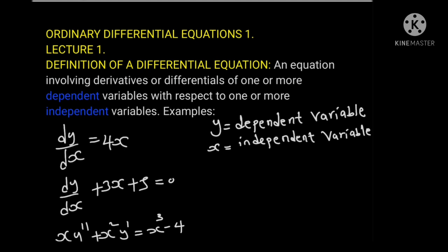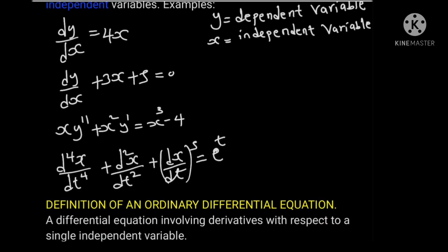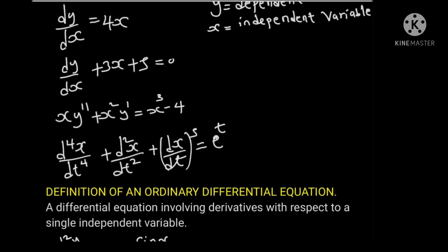Examples. Suppose we have dy over dx equals to 4x. In this differential equation, y is the dependent variable while x is the independent variable. Other examples of differential equations are: dy over dx plus 3x plus 5 equals to 0, and xy double prime plus x squared y prime equals to x cubed minus 4.